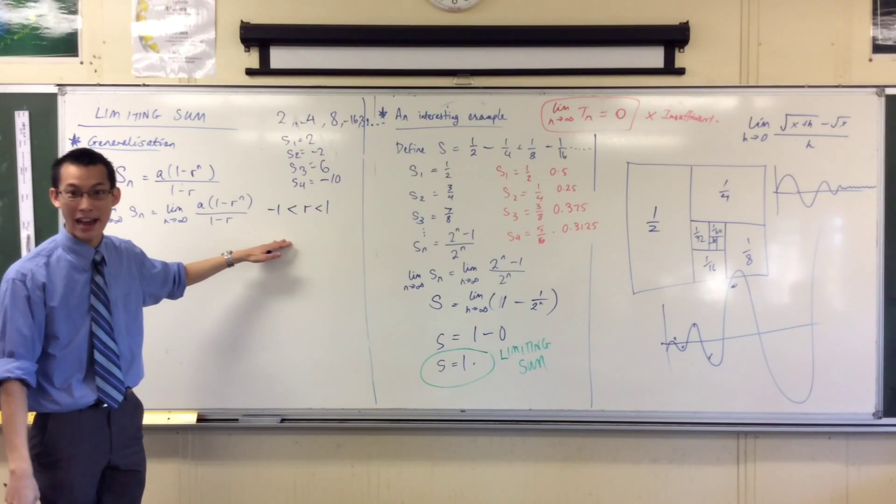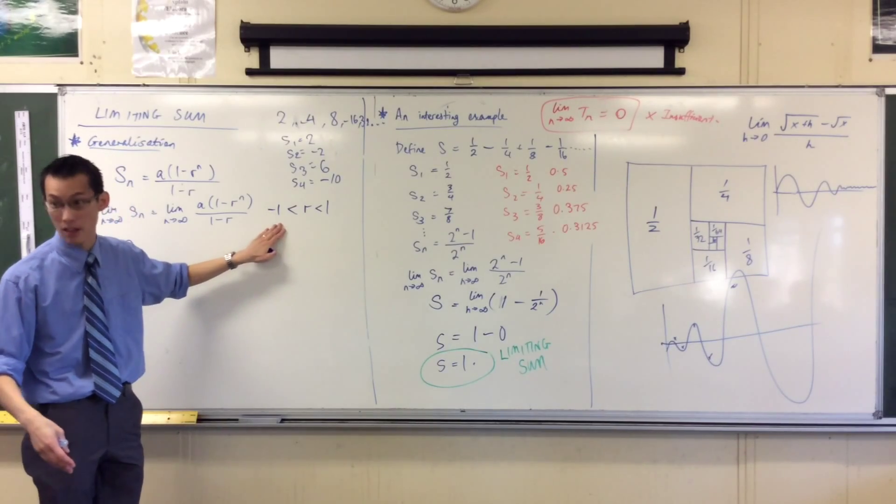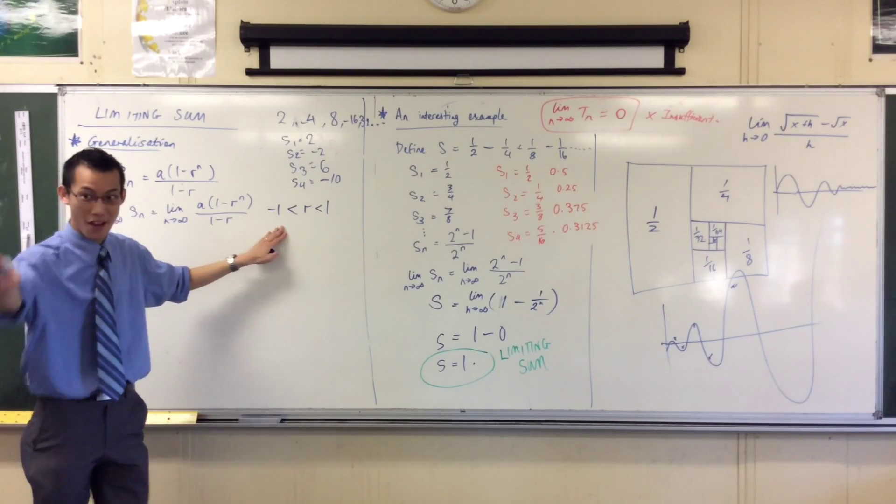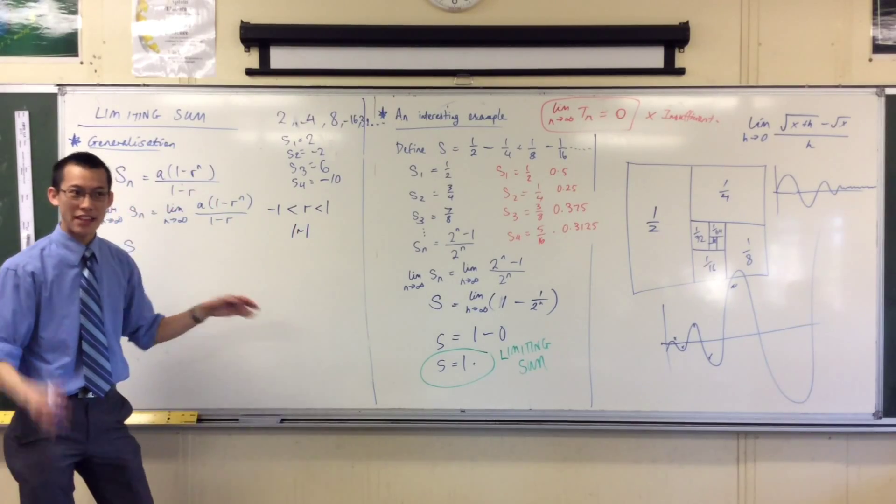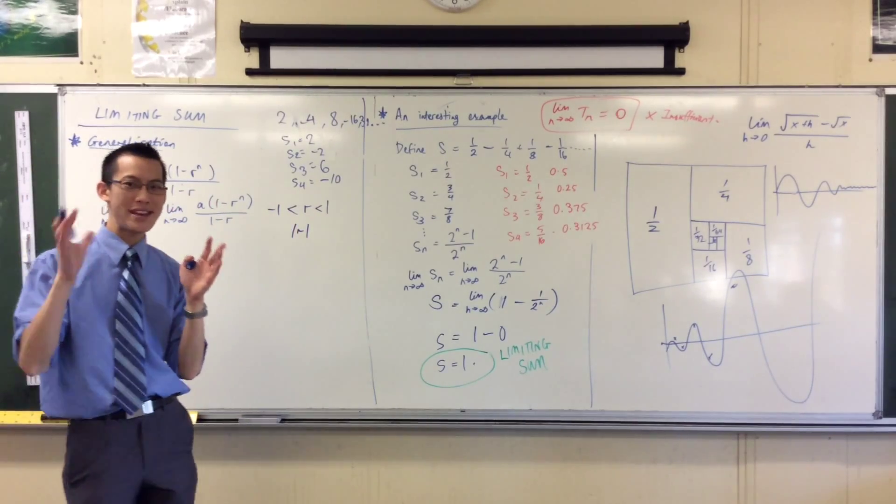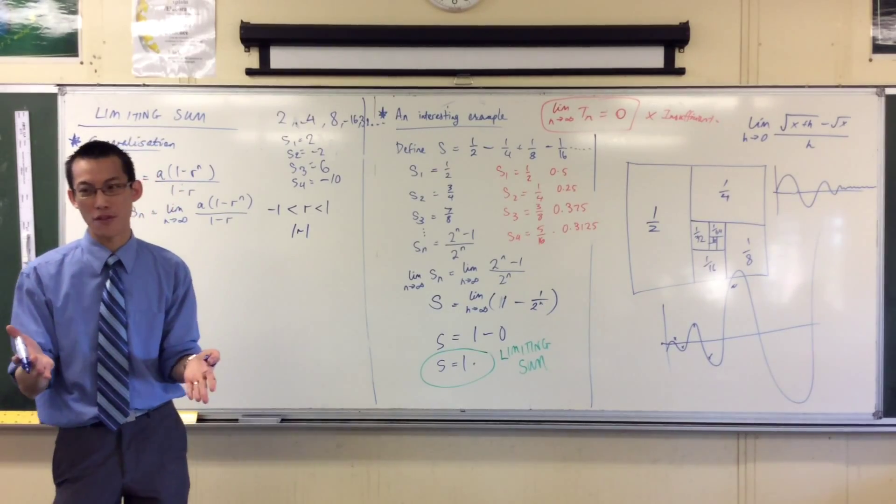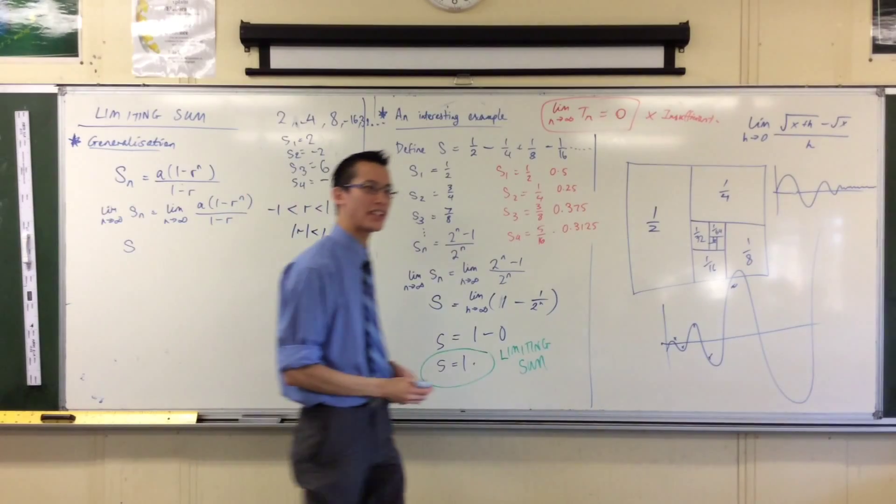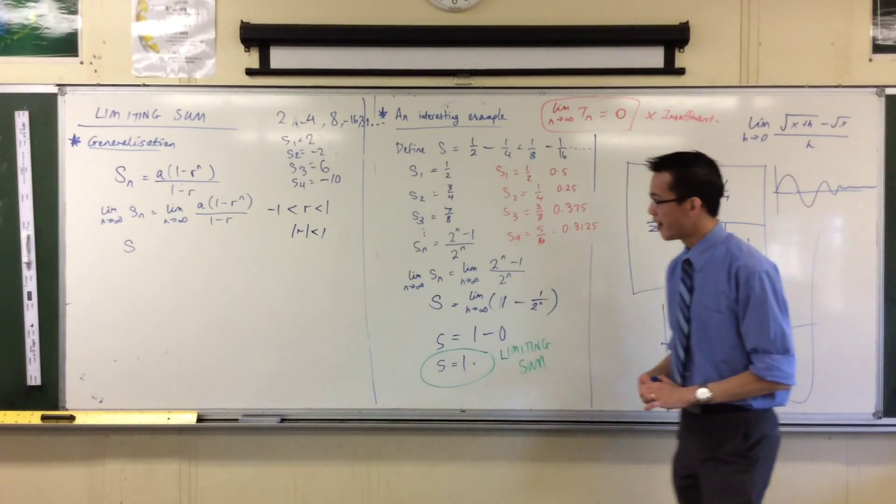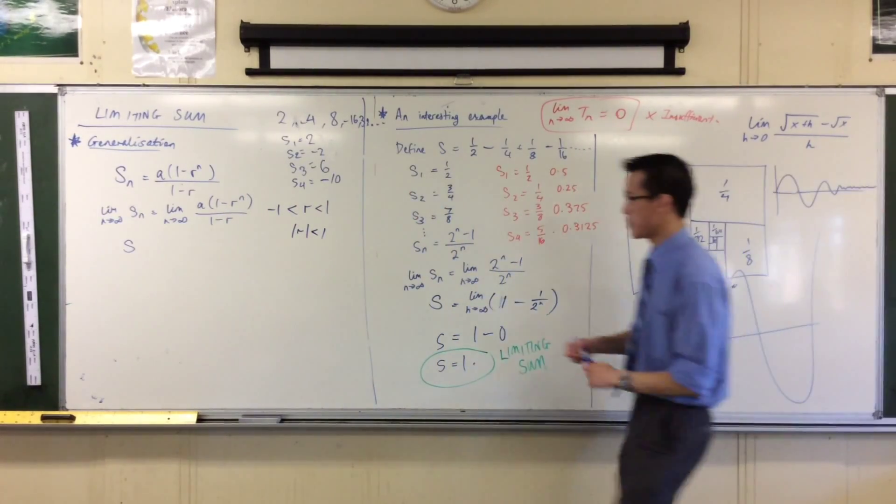Now, we have another name for size, right? How big something is irrespective of its sign. Irrespective of its sign. We call it absolute value. The absolute value of r. That's just how big am I, how far am I from the origin. I want that to be less than one. And that includes the negative one case. Okay? So, these two things, they mean the same thing.